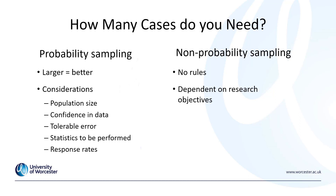When we must use non-probability sampling to collect quantitative data, we do need to consider the other factors we've discussed, such as what statistics will be performed. In an ideal world, we will use probability sampling when doing quantitative and statistical analysis. However, often this is not feasible, so we also need to consider what amount of data we'll need for our statistics.